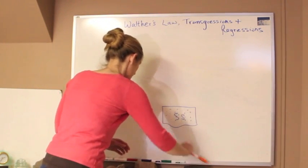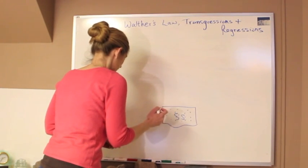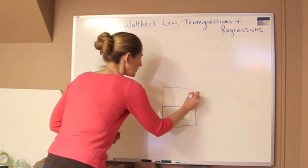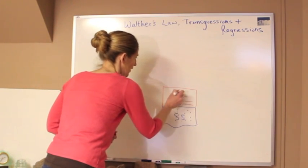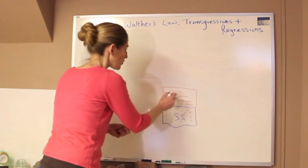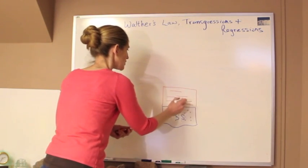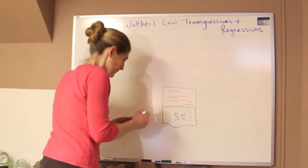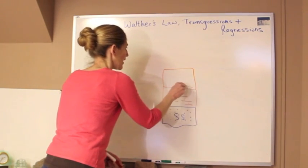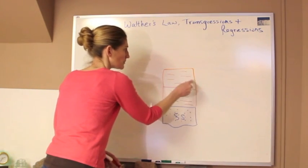Above that, we're going to start to see that the material becomes finer. Now it could be a change just from one unit to another, or if we're in the middle where it was transitioning, we might see that it's the sand and the silt. And then above that, we'll have the even finer grained material.